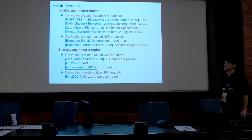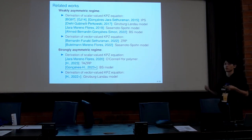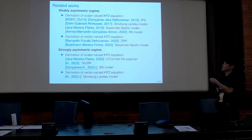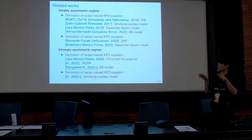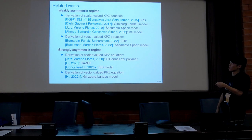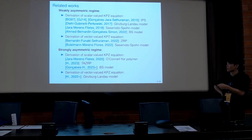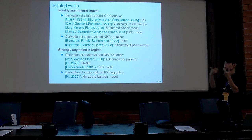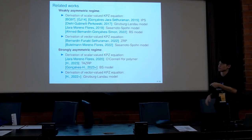Since the Bertini-Giacomin result, there are many papers deriving the equation from various microscopic systems. For example, one paper considered the zero-range process, another the Ginzburg-Landau model which is a system of stochastic differential equations, another the Sasamoto-Spohn model which is a kind of diffusion process, and there is also a paper studying the Bernhard-Stokes model. The multi-component KPZ equation has also been derived from various systems. All these results are in the so-called weakly asymmetric regime, where the discrepancy between p and q is of order 1/√n.